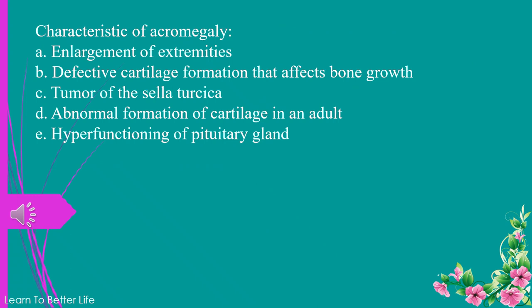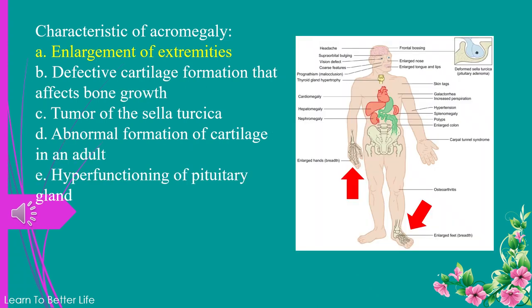Characteristic of acromegaly. a. enlargement of extremities. b. defective cartilage formation that affects bone growth. c. tumor of the cell atersica. d. abnormal formation of cartilage in an adult. e. hyperfunctioning of pituitary gland. The answer is a. enlargement of extremities.